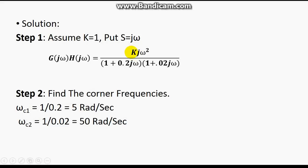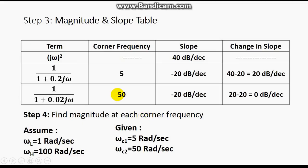Step 2: find the corner frequencies. The corner frequency is the reciprocal of the coefficient of jω in each (1 + Ts) term. The first coefficient is 0.2, giving corner frequency ωc1 = 1/0.2 = 5 rad/s. The second coefficient is 0.02, giving ωc2 = 1/0.02 = 50 rad/s. The individual jω² term does not contribute a corner frequency — only the (1 + Ts) form does. So there are two corner frequencies.